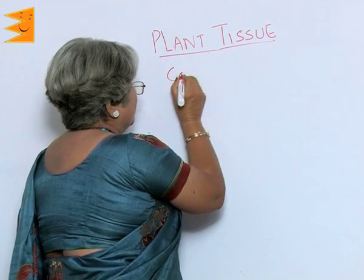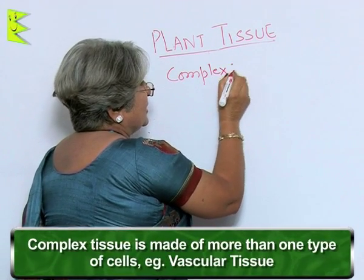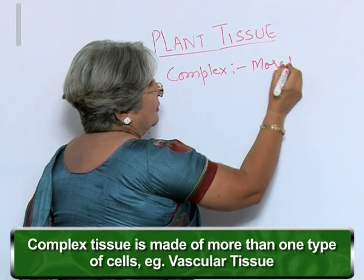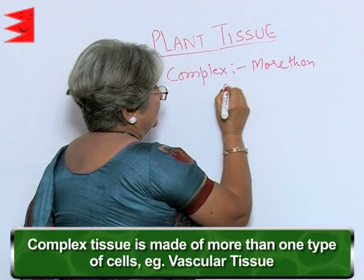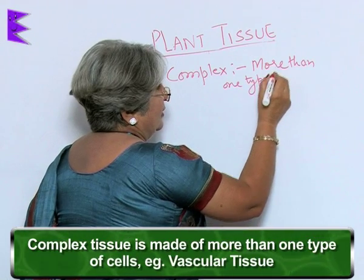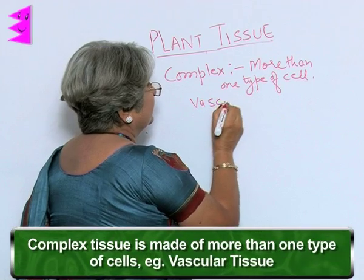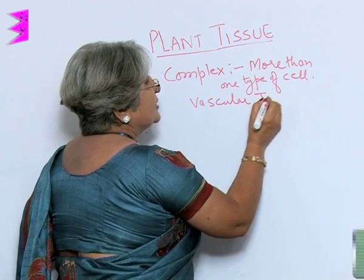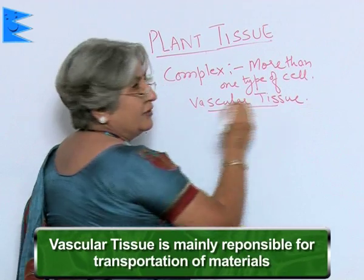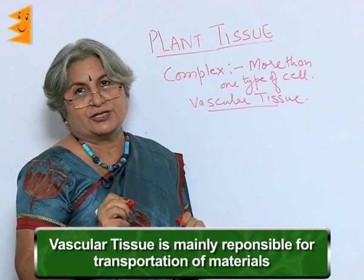Complex tissue is called complex because it is made of more than one type of cell. The example is vascular tissue. Vascular tissue is a complex tissue which is mainly responsible for transportation of material.